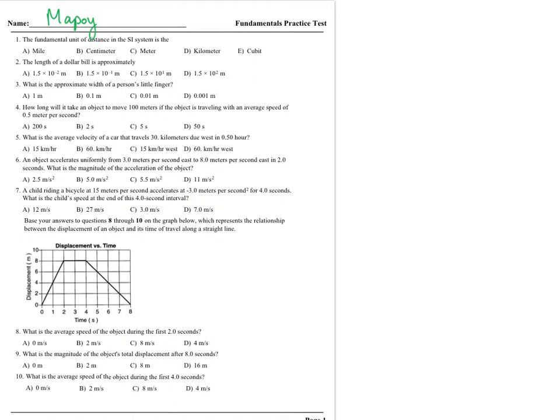Number one: the fundamental unit of distance in the SI system. This is pretty easy. Let's knock off those that are not in the SI system — mile and cubit. We're left with centimeters, meters, and kilometers. If you think about the units we usually measure distance with, that's pretty much meters.